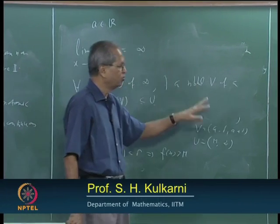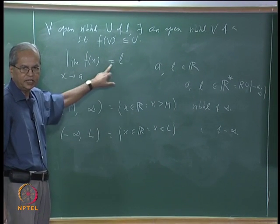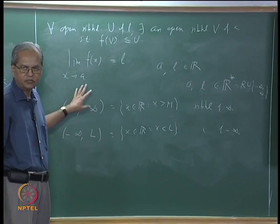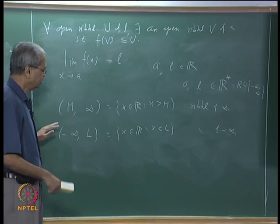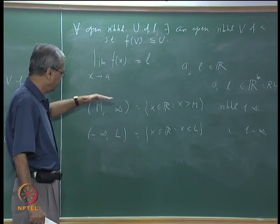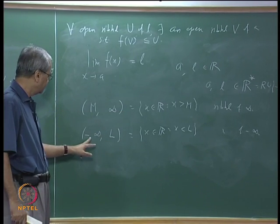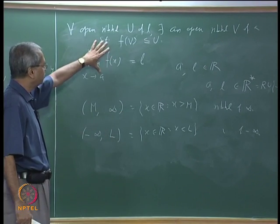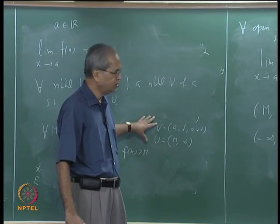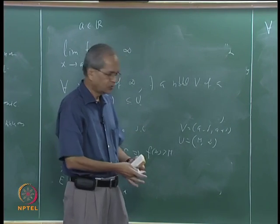Similarly, you can take all possible combinations: L = −∞ with A real, A = +∞ with L real, or both as extended reals. Just use the neighborhood-based definition with neighborhoods of ±∞ as intervals (M, ∞) or (−∞, L) respectively, and translate to get the usual epsilon-M style definitions familiar from analysis textbooks.